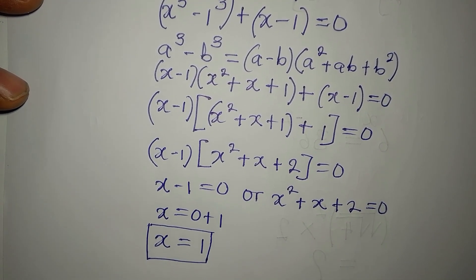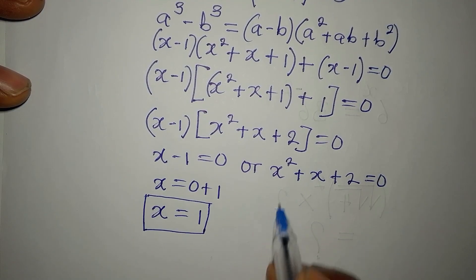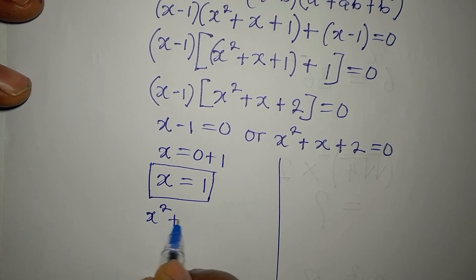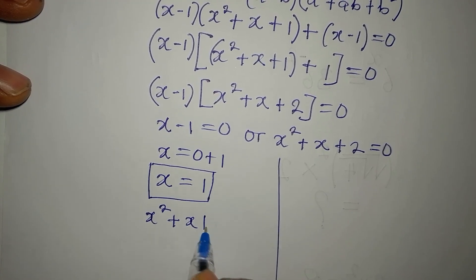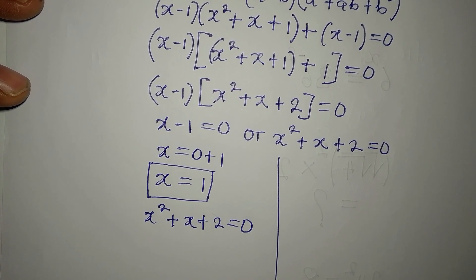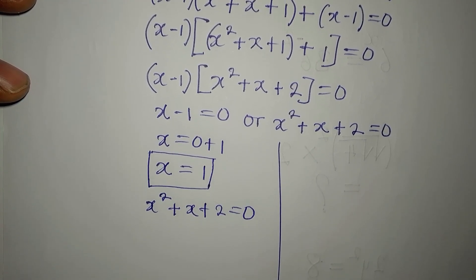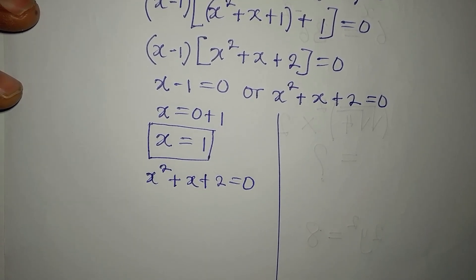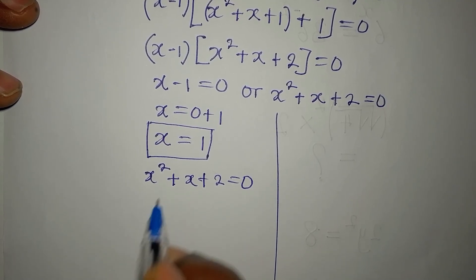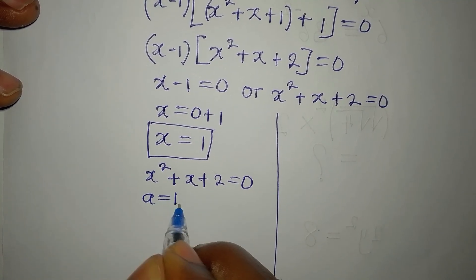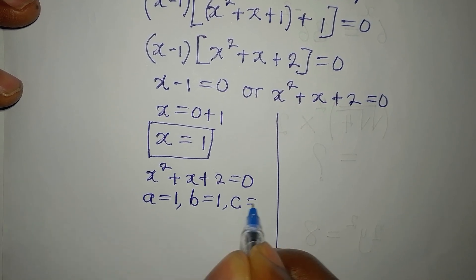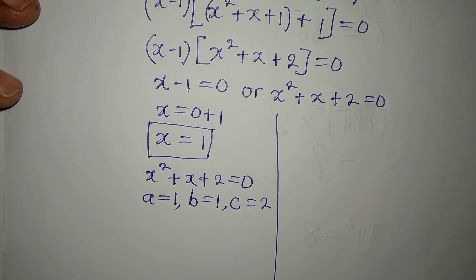For the quadratic x² + x + 2 = 0, we use the quadratic formula method. Identifying the coefficients: a = 1, b = 1, and c = 2.